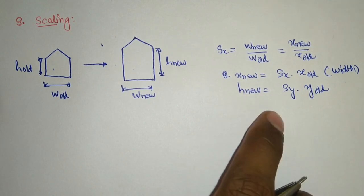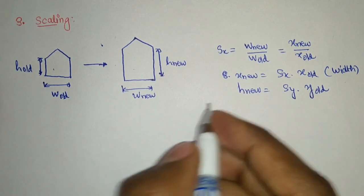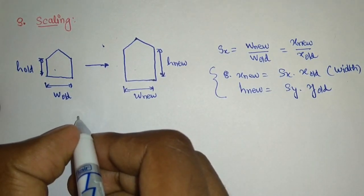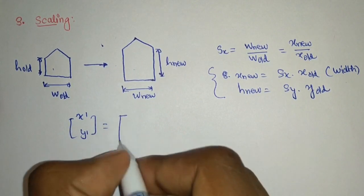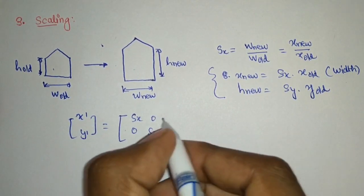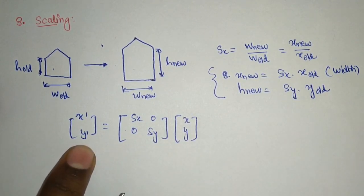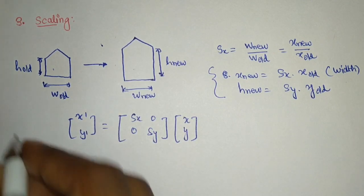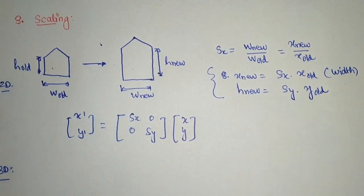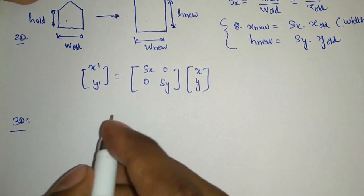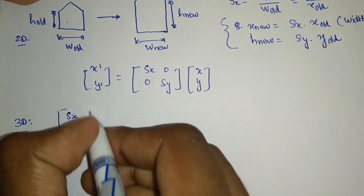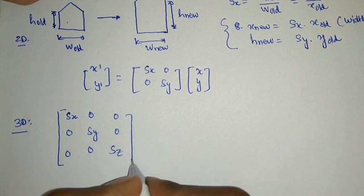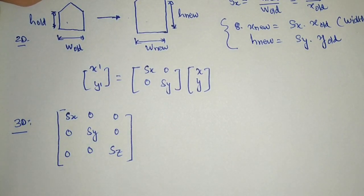Applying scaling in two dimensions — along x and along y — in matrix form: [x dash, y dash] = [[SX, 0], [0, SY]] times [x old, y old]. In 3D, we may also have a scaling factor along z, giving the matrix [[SX, 0, 0], [0, SY, 0], [0, 0, SZ]] as the 3D scaling matrix.